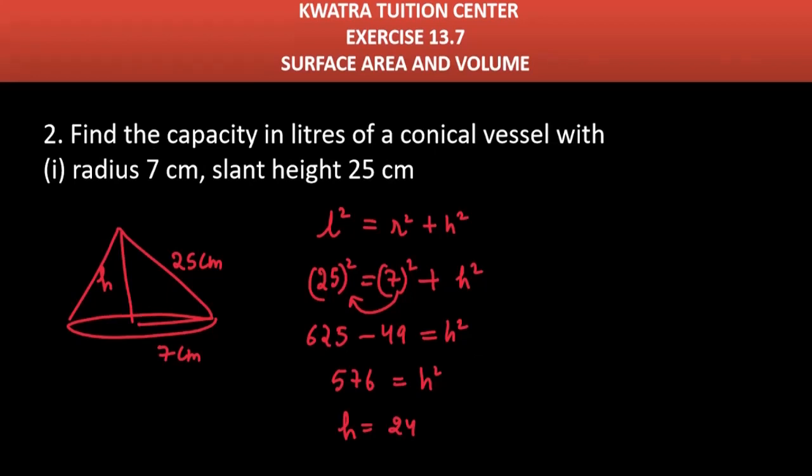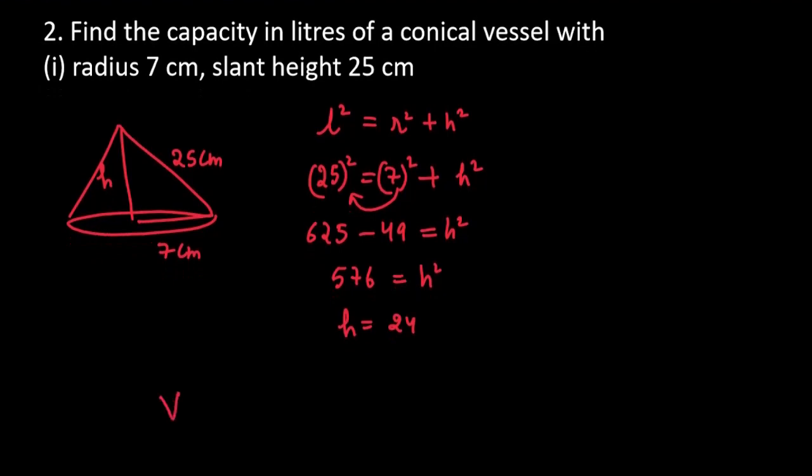Now, what do we need to do here? Volume, how do we need to do here? 1 by 3 πR²H. 1 by 3 as it is, π is 22 by 7, R² is 7² into H 24.